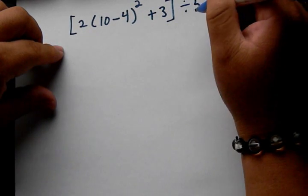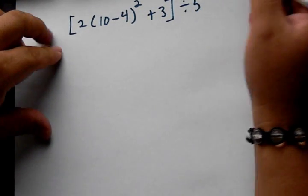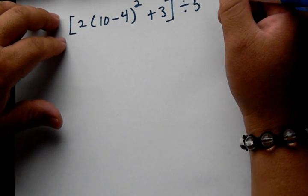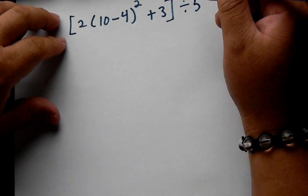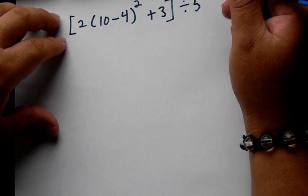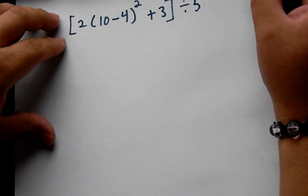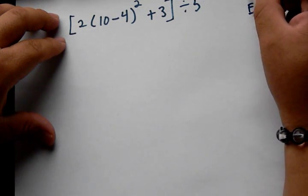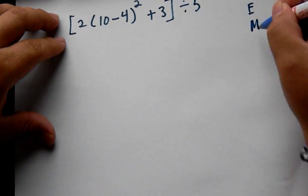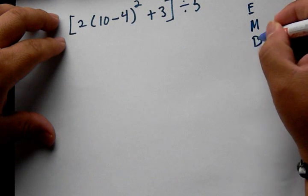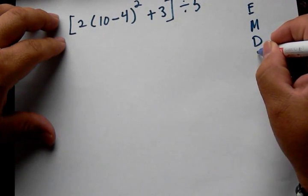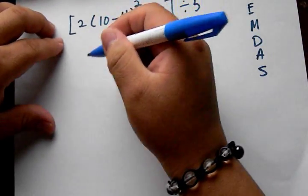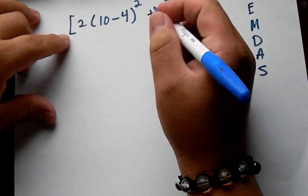The way we go and take a look at this is by following the order of operations, or I guess you can call it PEMDAS: parentheses, exponents, multiplication, and division, and addition, and subtraction — PEMDAS.